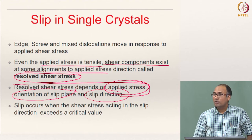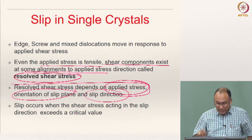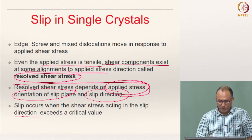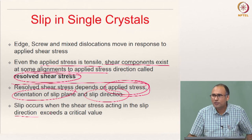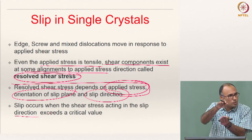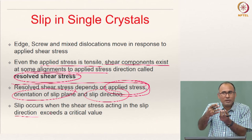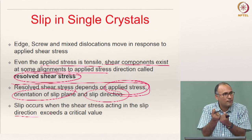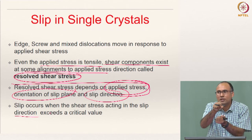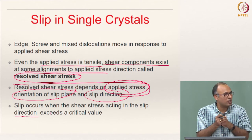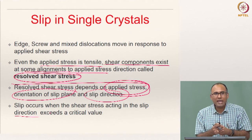Slip occurs when the resolved shear stress acting in the slip direction exceeds a critical value — it must be able to break the bond. The material has some resistance, some strength, and the resolved shear stress must overcome that strength for slip to occur. Otherwise, you will only be causing elastic deformation. To break the bond, you need to apply a sufficiently large shear stress.